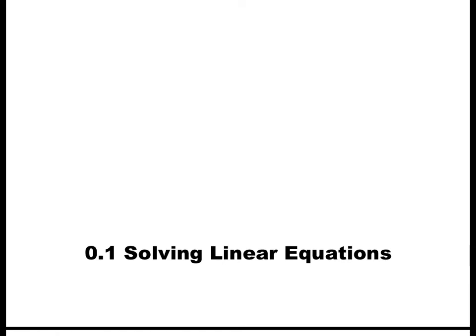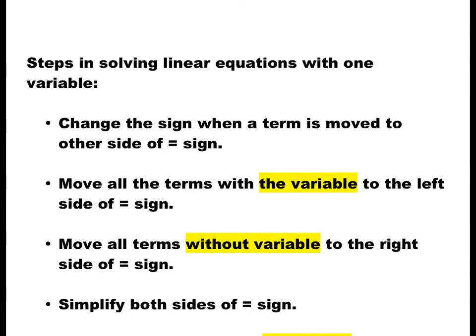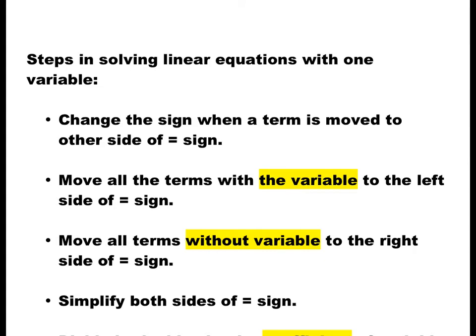We're going to start with solving linear equations — a simple topic you've already seen in Grade 9, so I'm going to go through it very fast. When you get a linear equation like 2x plus 5 equals 10, you have to solve it by finding the value of x. To find x, you isolate the variable. To isolate x, keep the variable on one side of the equal sign and all the numbers on the other side. When you move any item from one side to the other, you change the sign.